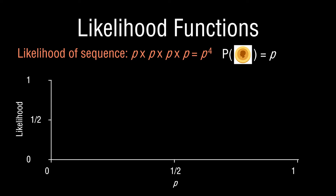p can range between zero and one. p equaling zero is the case of the coin being tails 100% of the time — zero percent chance the outcome will be heads. On the other extreme, p equals one means the coin is heads every time it's flipped. p equals one half represents a fair coin — 50% chance heads, 50% chance tails.